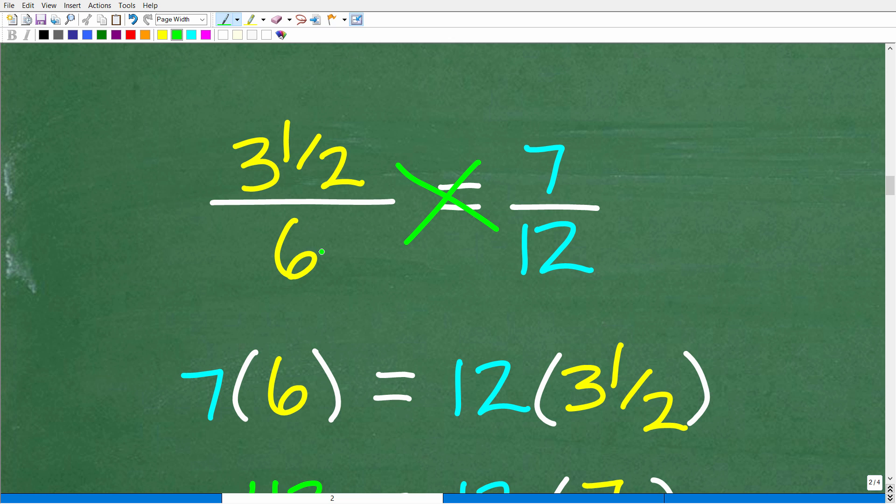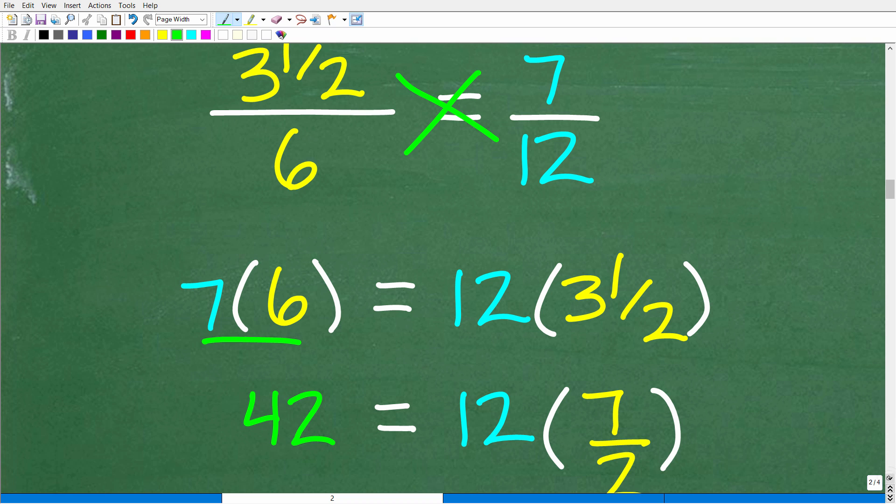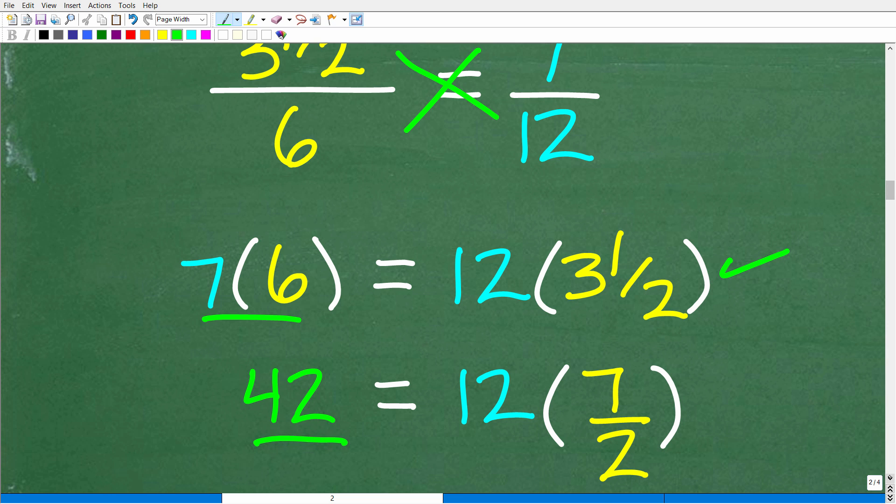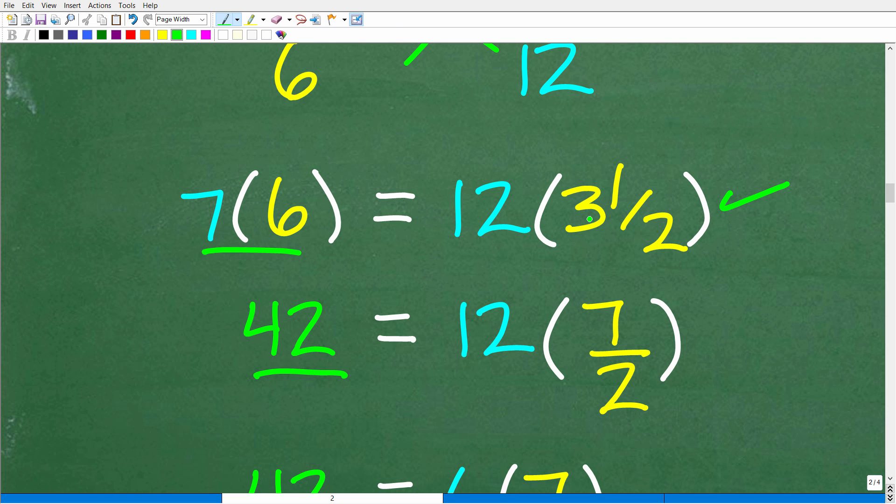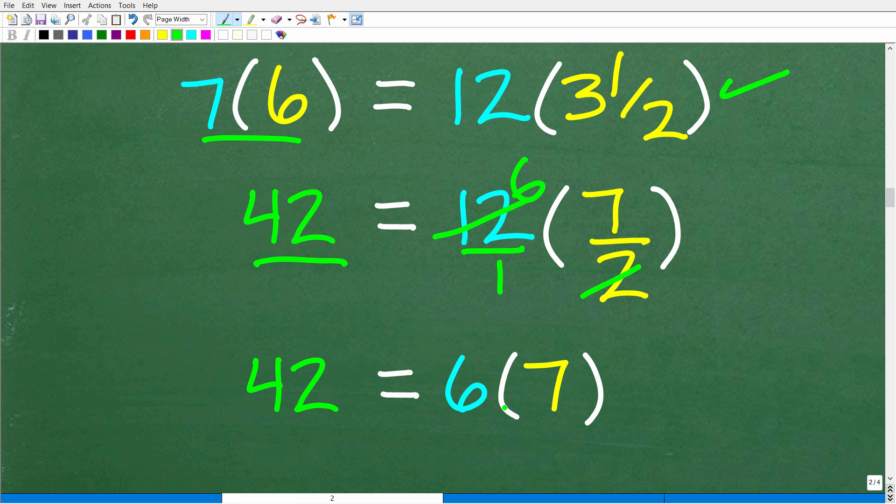So, let's go ahead and check this. So, 7 times 6, of course, is going to be 42. So, now, we have to check 12 times 3 1/2. We have a mixed fraction here. No big deal. So, we can change this to an improper fraction. So, 2 times 3 is 6 plus 1 is 7/2. And then here, when we have 12 times 7/2, or 12 over 1, we could just take this 2, goes into 12. That would be 6 times. So, 6 times 7, of course, is 42. So, 42 is equal to 42.